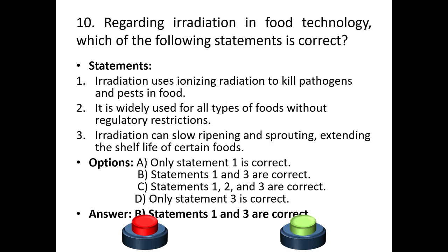Tenth question: regarding irradiation in food technology, each of the following statements is correct. Statement one: Irradiation uses ionizing radiation to kill pathogens and pests in food. Statement two: It is widely used for all types of foods without regulatory restrictions. Statement three: Irradiation can slow ripening and sprouting, extending the shelf life of certain foods.